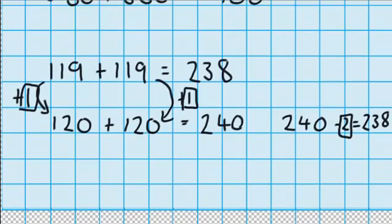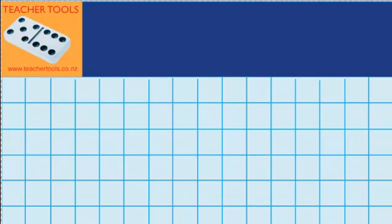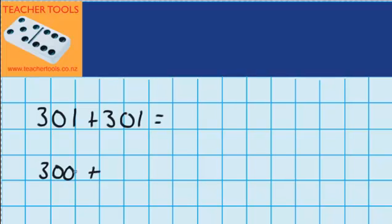Let's have a look at another one. This time let's do 301 plus 301. Well, just like last time, it's very easy to see that 300 plus 300 is going to be the doubles that'll help me.